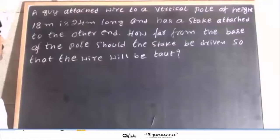And has a stake attached to the other end. How far from the base of the pole should the stake be driven so that the wire will be taut?